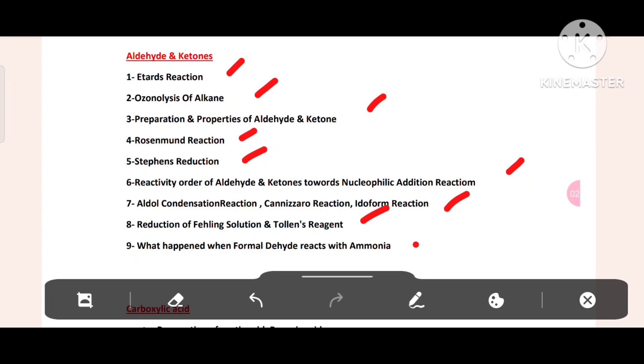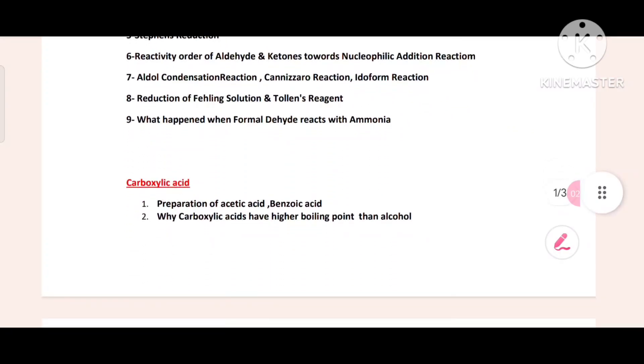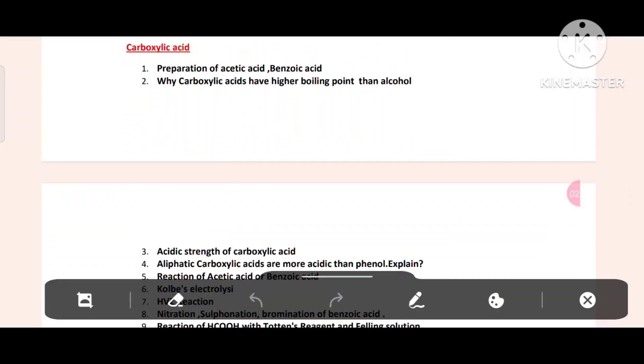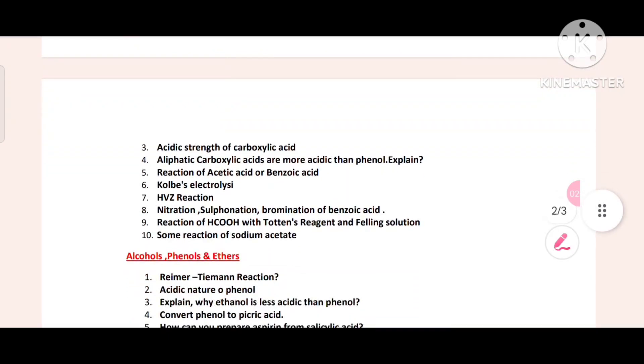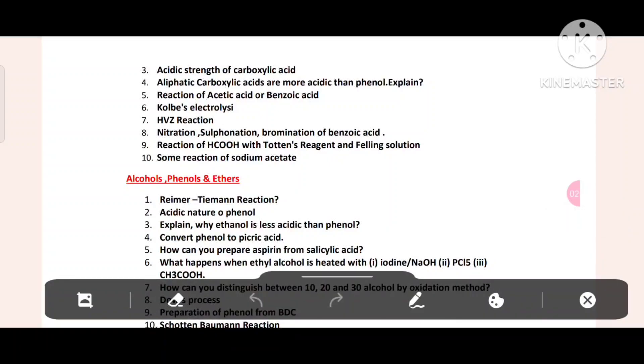Then what happens when formaldehyde reacts with ammonia. Then carboxylic acid. Preparation of acetic acid, benzoic acid. Why carboxylic acids have higher boiling point than alcohol. Then acidic strength of carbolic acid, carboxylic acid. Aliphatic carboxylic acids are more acidic than phenol. Reaction of acetic acid, benzoic acid. Then Kolbe electrolysis, HVZ reaction, nitration, sulfonation, bromination of benzoic acid. Reaction of HCOOH with Tollen's reagent and Fehling solution. Some reaction of sodium acetate.